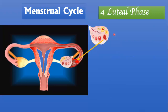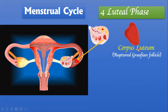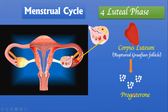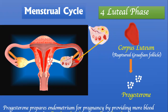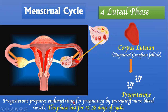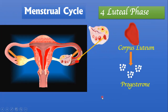At the end of the ovulation phase, the ruptured graafian follicle, now named the corpus luteum, becomes the major source of another female sexual hormone named progesterone. Progesterone is responsible for making the endometrial wall more secretory in nature, preparing it for a potential pregnancy by providing more blood vessels to the endometrium. The luteal phase lasts from day 15 to day 28 of the cycle.